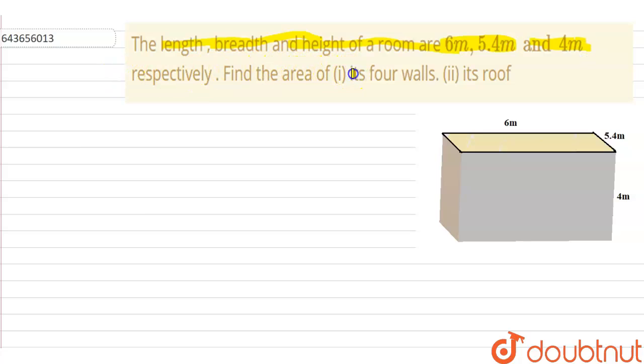Find the area of its four walls and its roof. Here in this figure, a room whose dimensions are 6 meter, 5.4 meter, and 4 meter are given. And we have to find the area of its four walls and its roof. Let's start the solution.